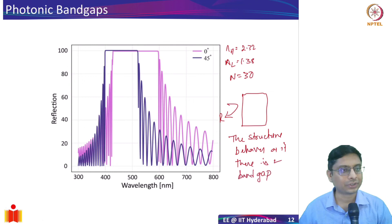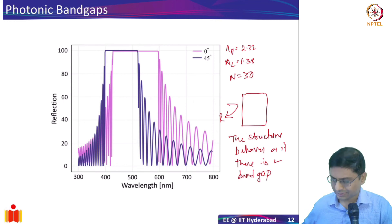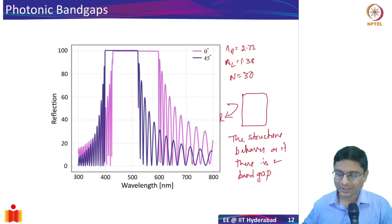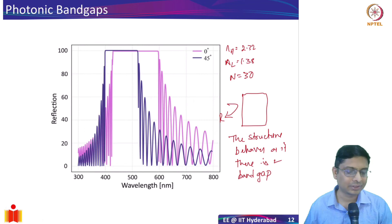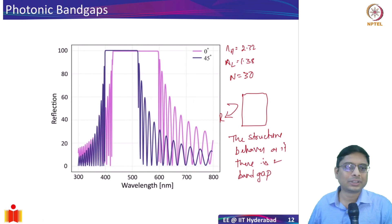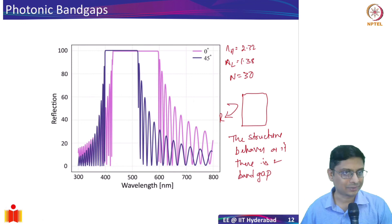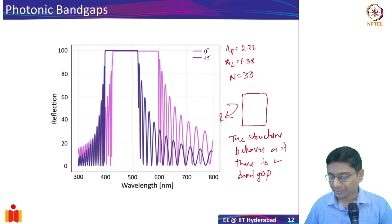This is a very interesting concept — how band gaps occur in periodic optical structures. In the next lecture I will talk about photonic band gaps in more detail. The T-matrix is extremely useful in nano-photonics: I routinely ask my PhD students to validate simulation results with T-matrix calculations for simple cases to confirm their simulation setups are correct. With that, I'll stop this lecture and see you in the next one.